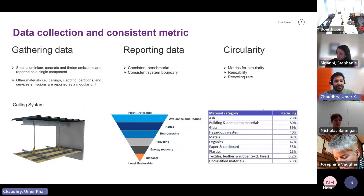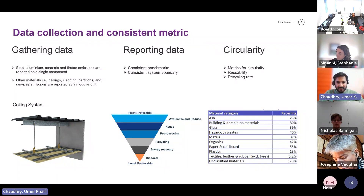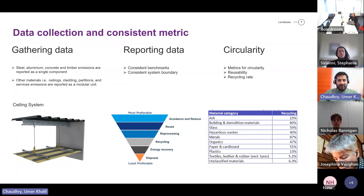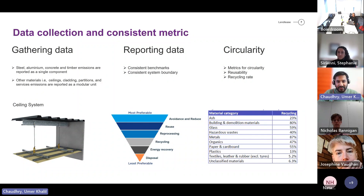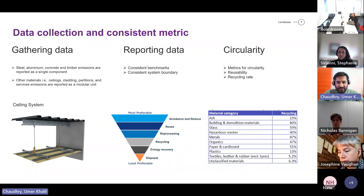The final step is circularity. After optimizing material based on quantity, emission factors, and design life, the next step is assessing the circularity of that material. We need to define some kind of metric for how circular a material is and what data is available to define circularity. We need to look at the durability of the product, reusability, and current recycling rates — all those factors need to be considered when collecting data.